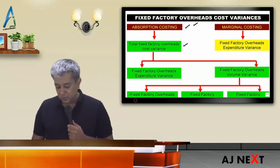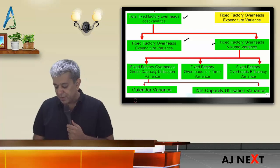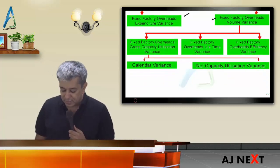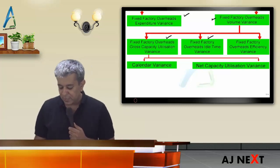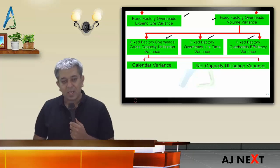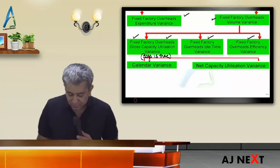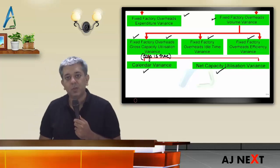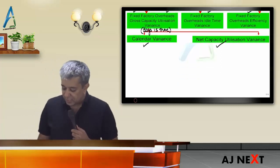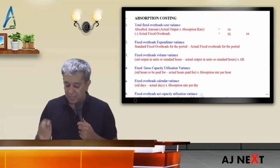Under absorption costing, total fixed overhead cost variance has two parts: fixed overheads expenditure variance, and fixed factory overheads volume variance. Volume variance has three parts: capacity utilization (also called gross capacity utilization), time variance, and efficiency variance. If days data is present, the gross capacity utilization variance further splits into two parts: calendar variance and net capacity utilization variance.